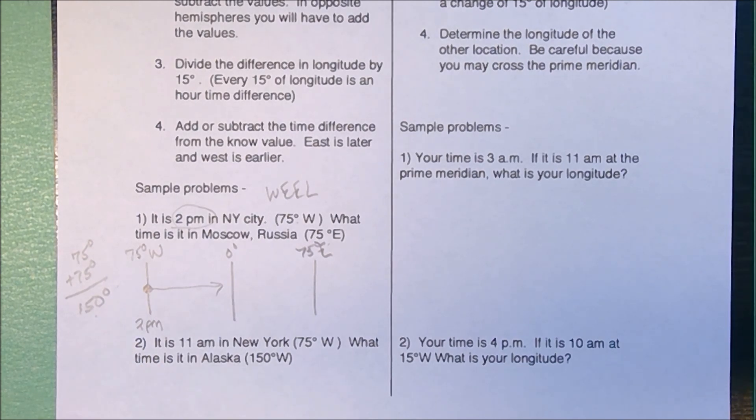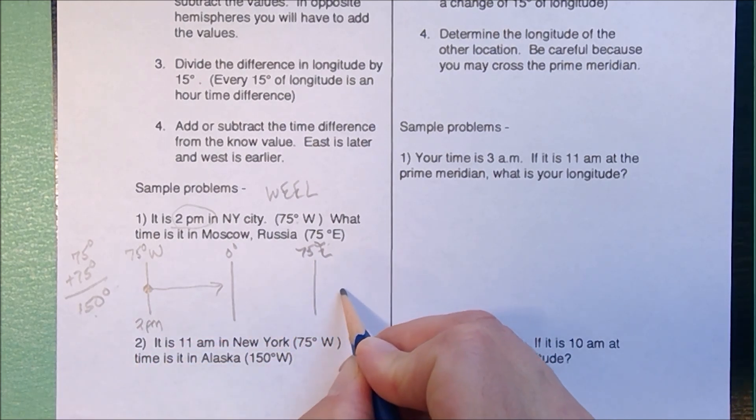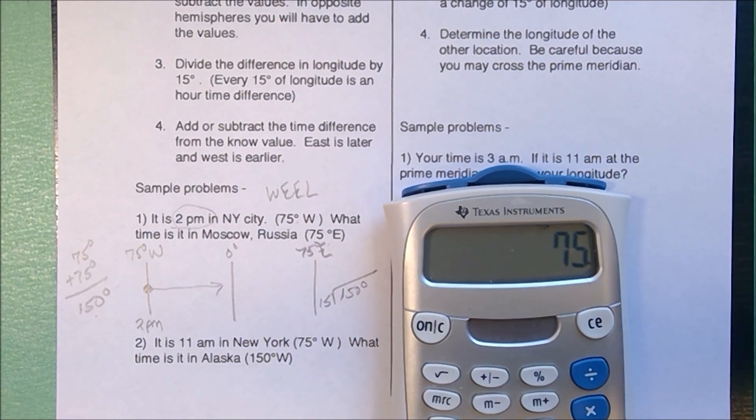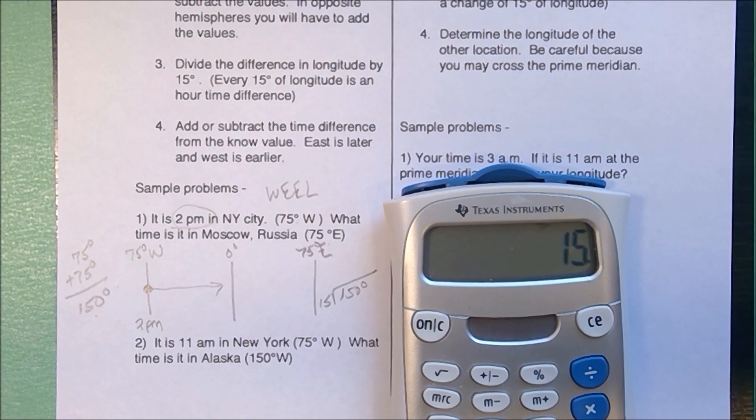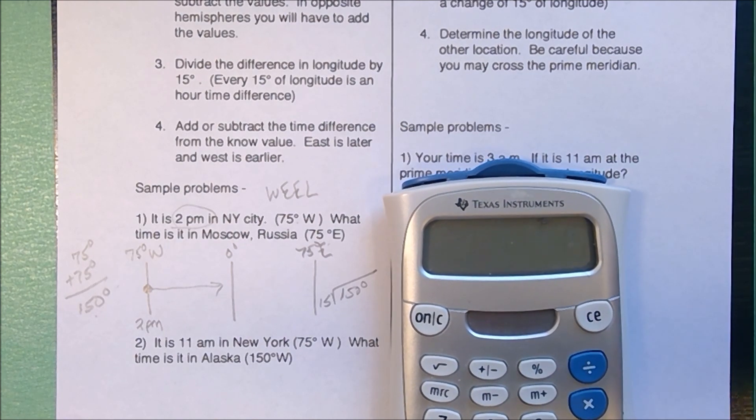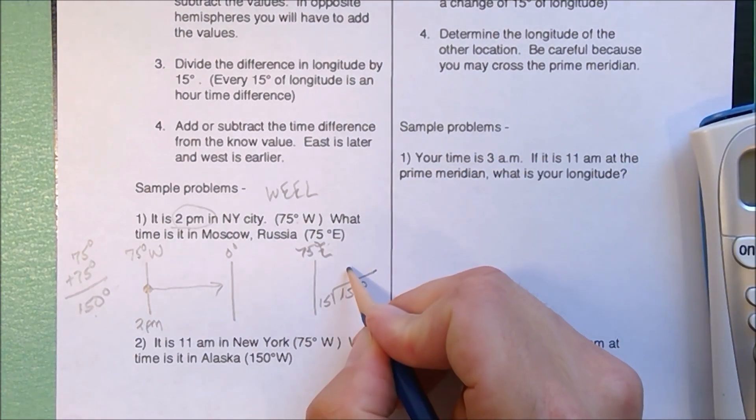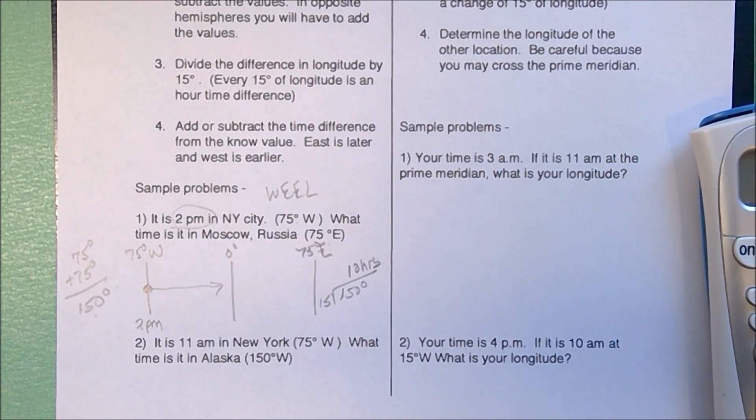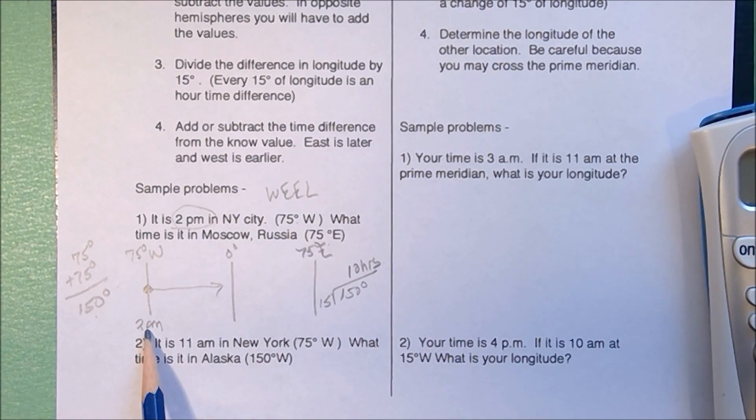I know the number of degrees. Therefore, I'm going to take the 150 degrees and divide by 15. I hope you don't need a calculator, but 150 divided by 15 is 10 hours apart. So these are separated by 10 hours. Two o'clock in the afternoon, 10 hours later - two plus 10 is 12. This is going to be midnight.